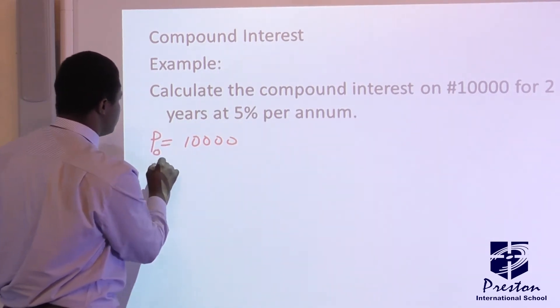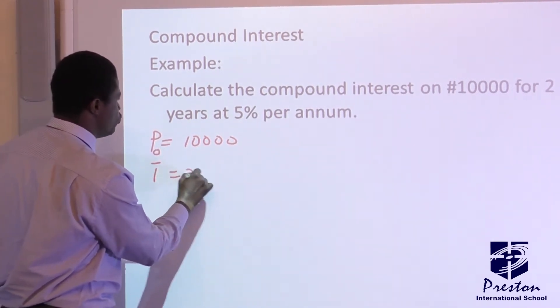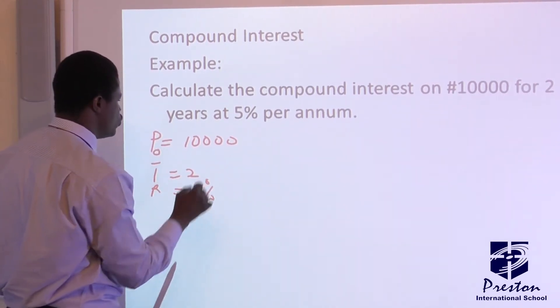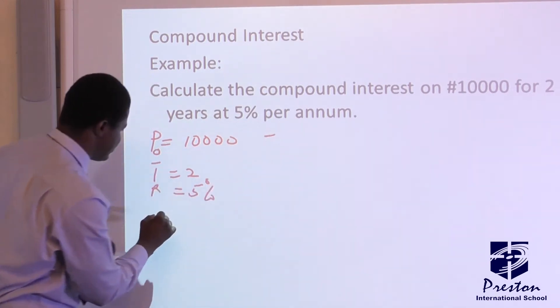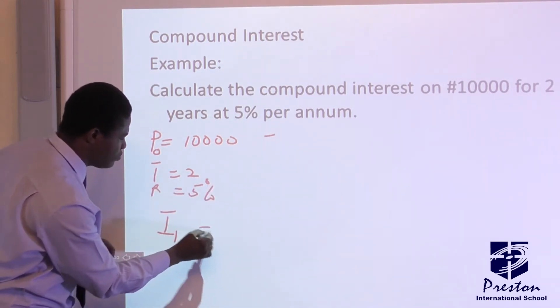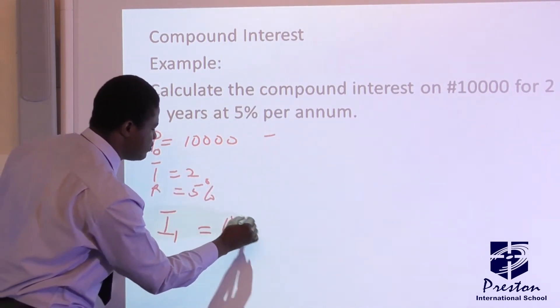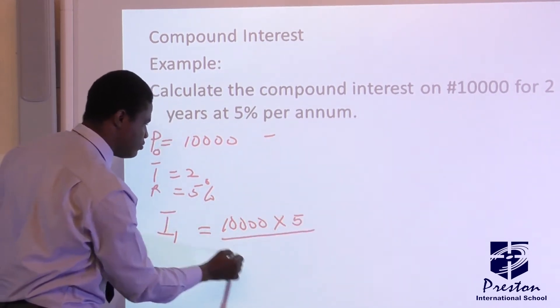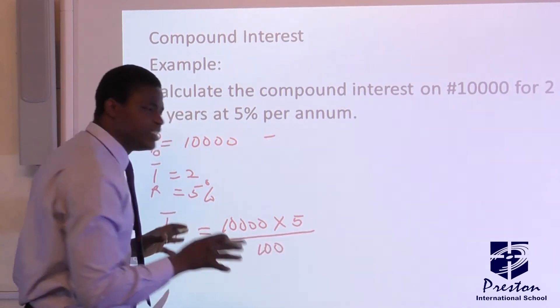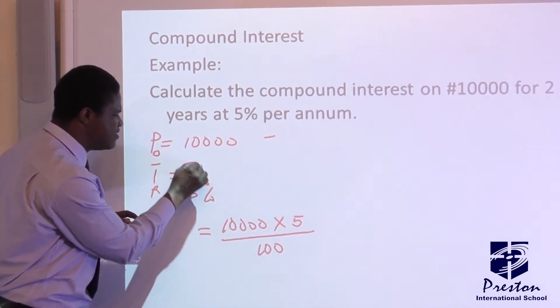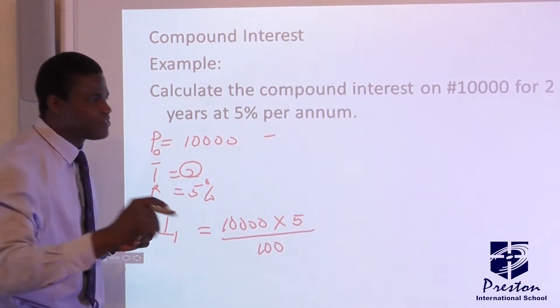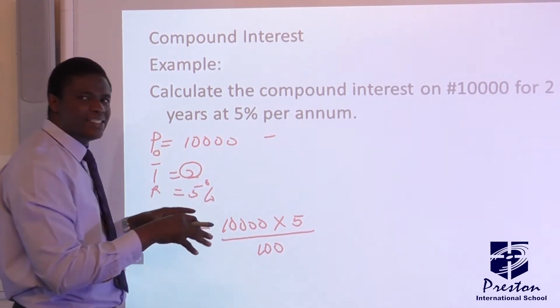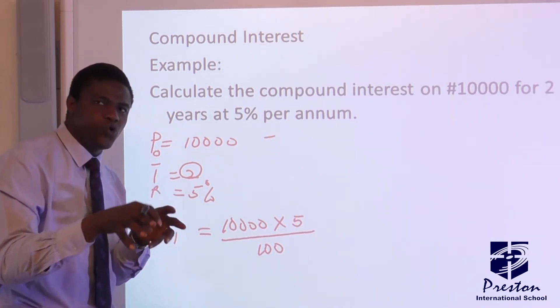Now, our time is 2. Now our rate is equal to 5%. So for us to calculate interest 1, I1. This will be 10,000 times 5 over 100. Take note, in this case, I am not using this year. Because I have said it earlier that we calculate interest per year in compound interest, unlike simple interest.